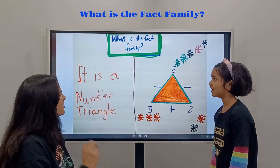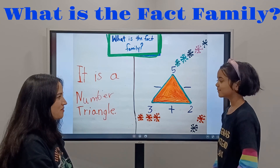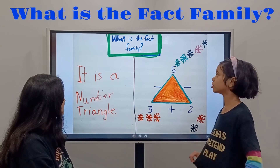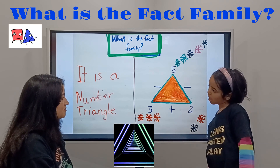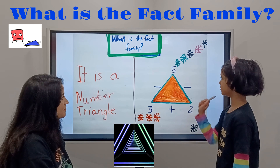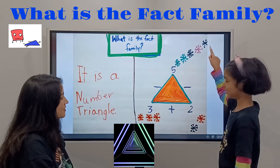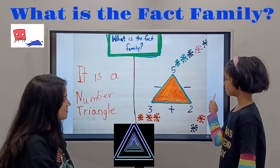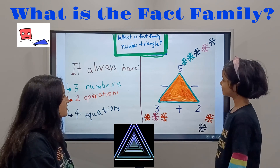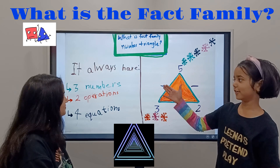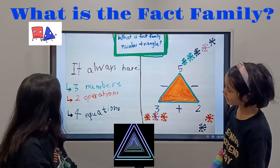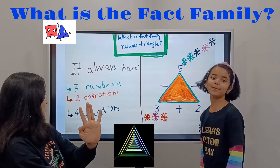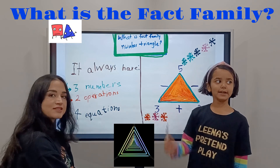What is the fact family? That's something new for me. Well, I do this for my school — it's a triangle. It is a number triangle. So we have three, two, and five. What is the fact family number triangle? Each one has three numbers, two operations, and four equations.